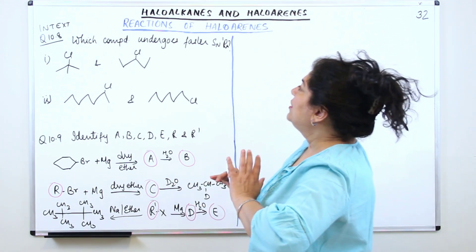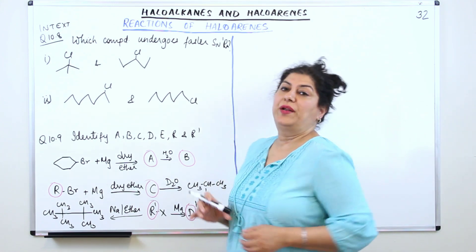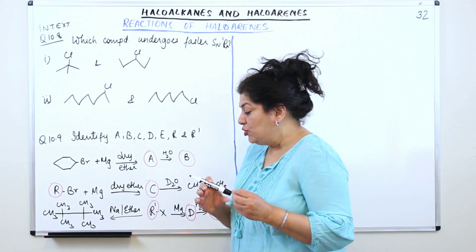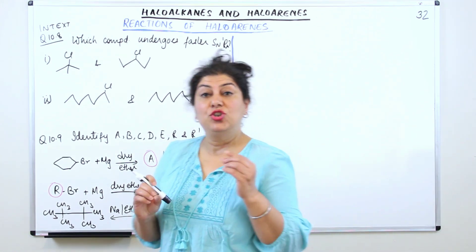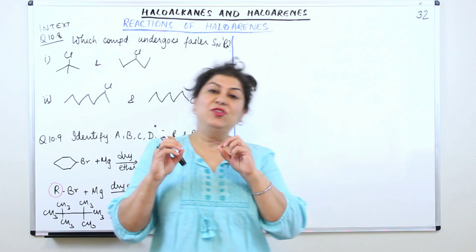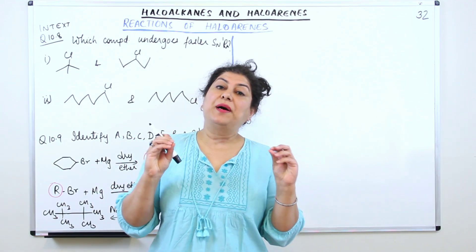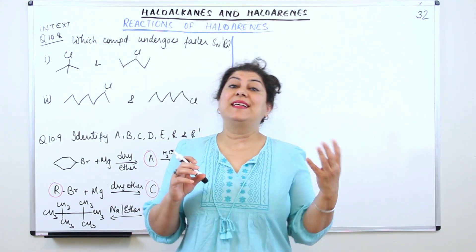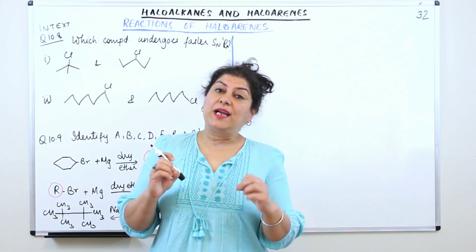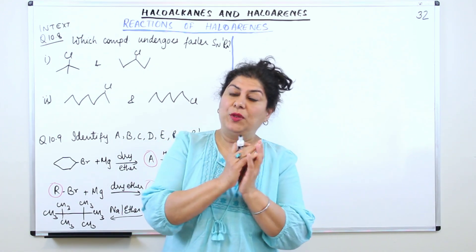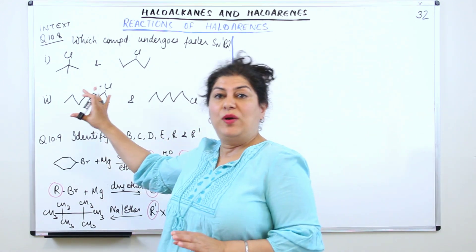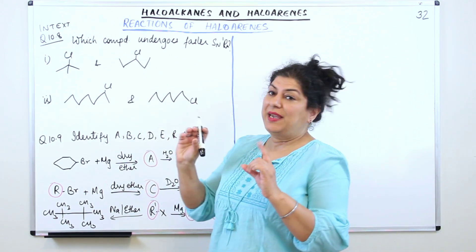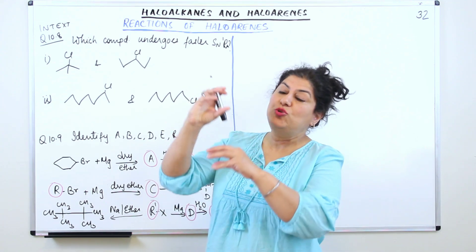Which compound undergoes faster SN1 reaction? As I told you in the previous video, for SN2 reaction, the two reactants participate at the same time and that is why it is known as SN2 reaction. SN2 reaction takes place in one step. On the other hand, SN1 reaction — that is nucleophilic substitution reaction one — takes place in two steps.